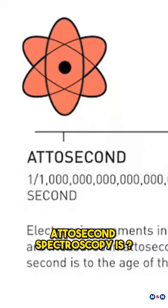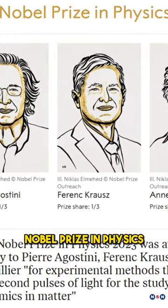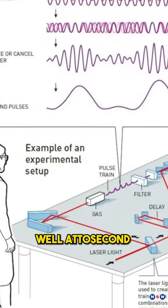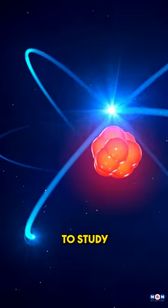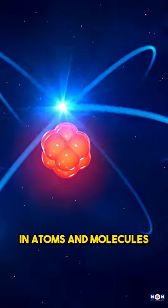Hey, do you know what attosecond spectroscopy is and why it won the 2023 Nobel Prize in Physics? Well, attosecond spectroscopy is a technique that uses super short pulses of light to study the motion of electrons in atoms and molecules.